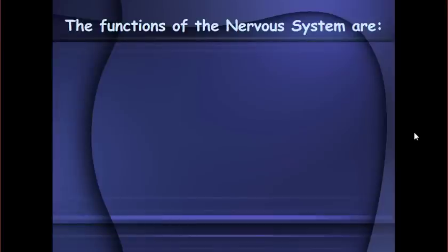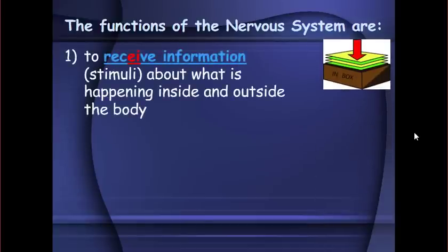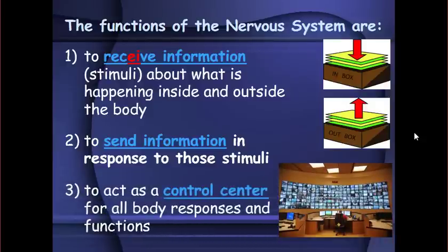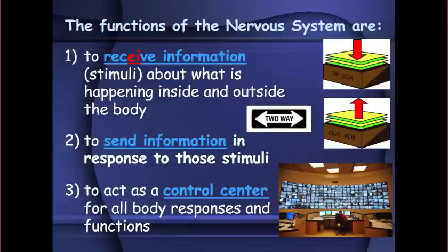To begin a discussion of the nervous system, the first thing we need to talk about are its functions. Most importantly, the nervous system will receive information in the form of stimuli about what is happening inside and outside the body, and then send information in response to those stimuli. It also acts as a control center for all the body's responses and functions.